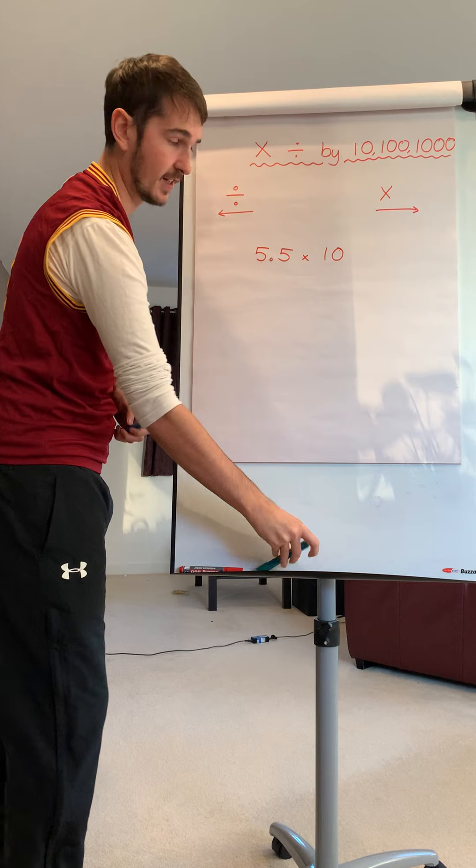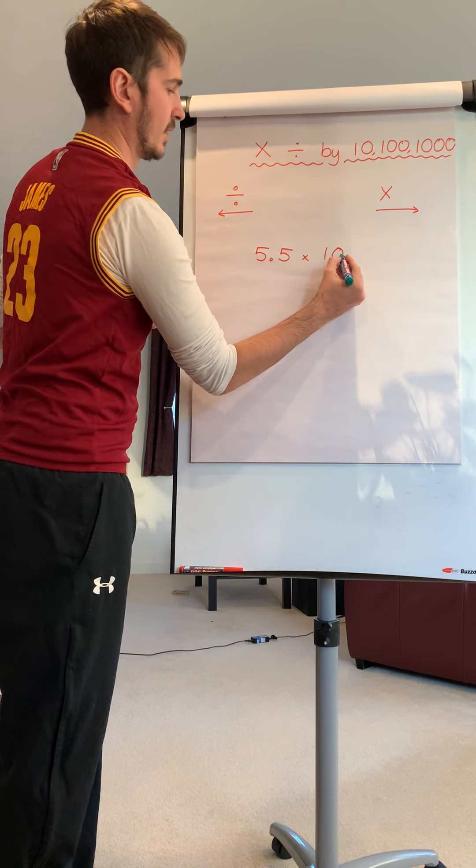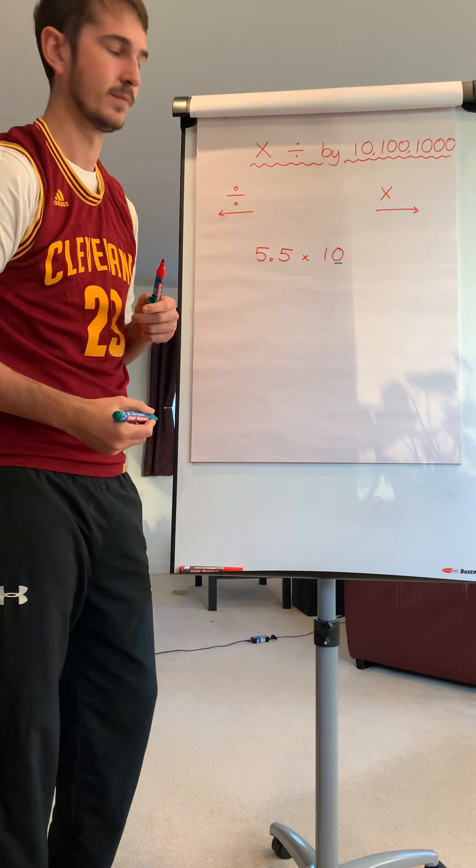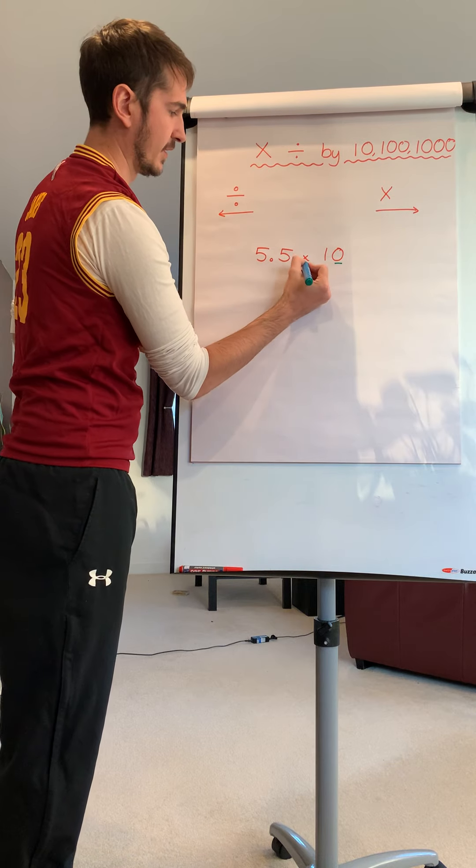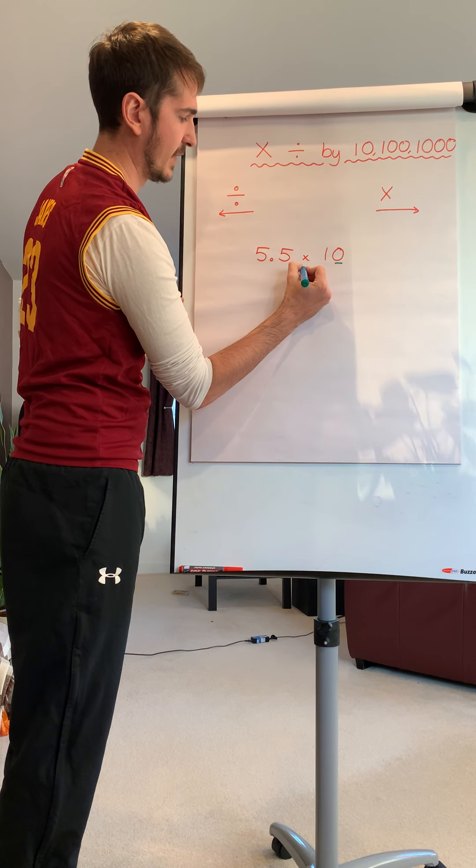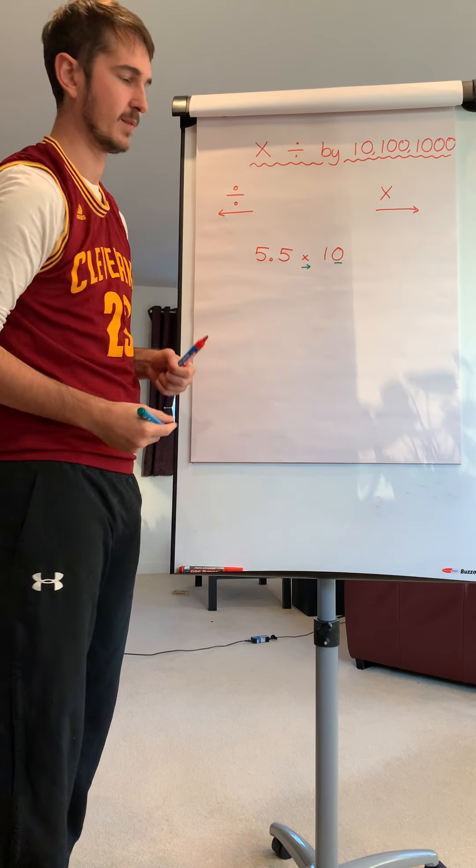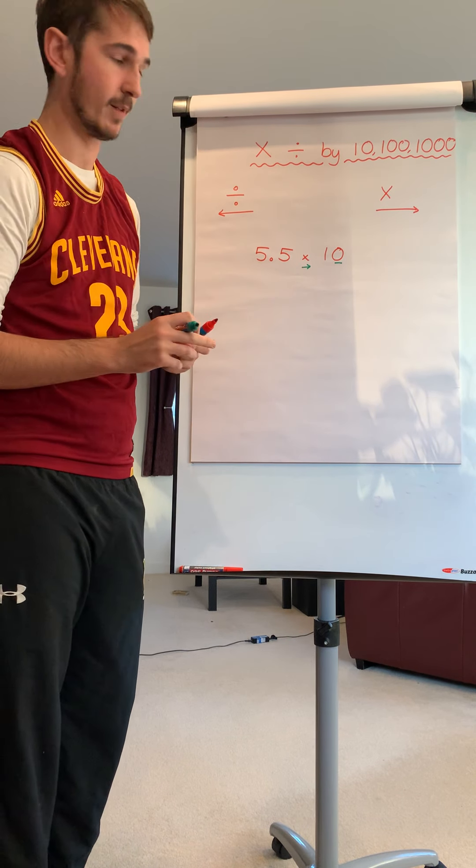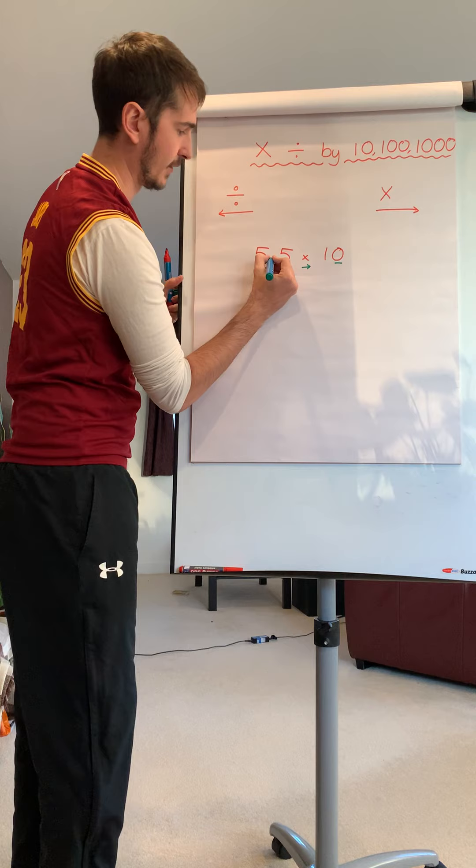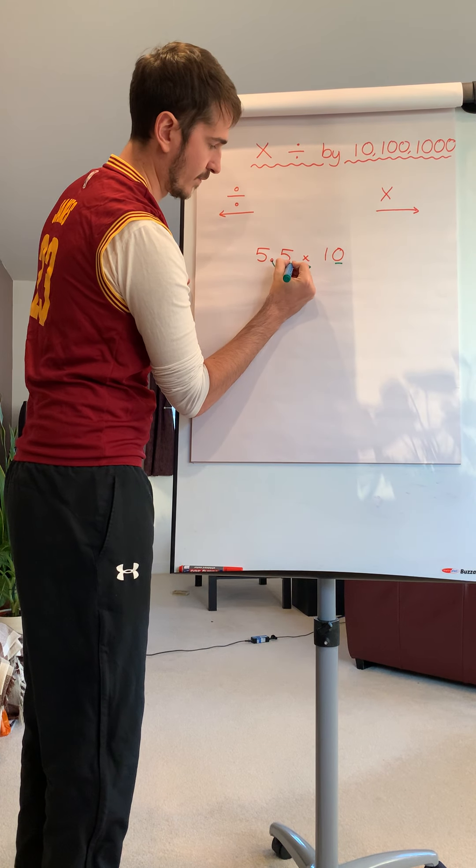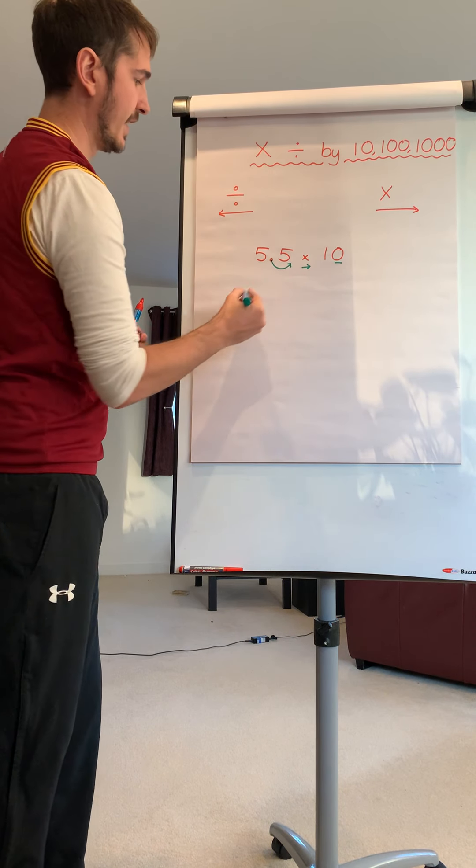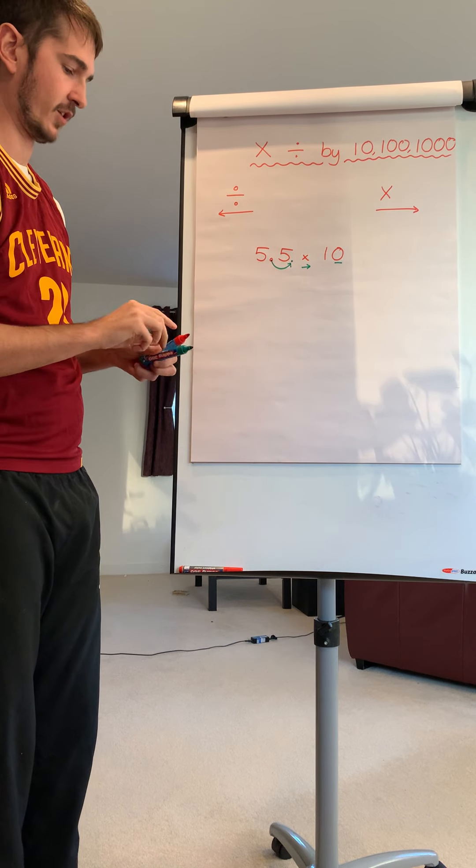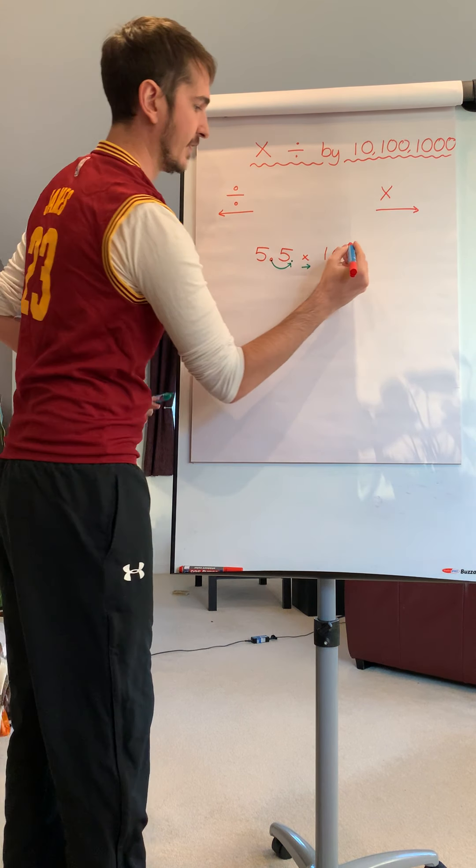So a couple of examples. We're going to do 5.5 times 10. Two things to help me here: I've got one zero and I'm going to times. The times is telling me I'm going to move the decimal point to the right, and the zero is telling me I'm going to move it one place. So I'm going to move it there, my new decimal point, so I've got 55.